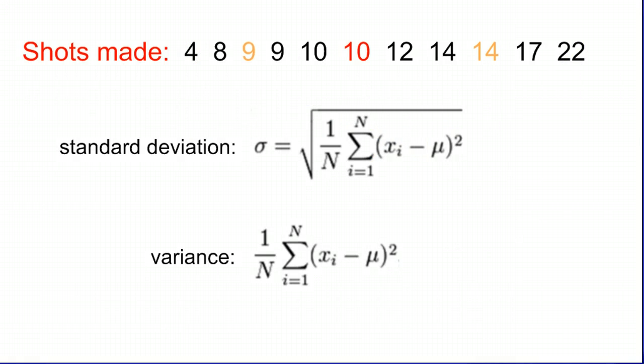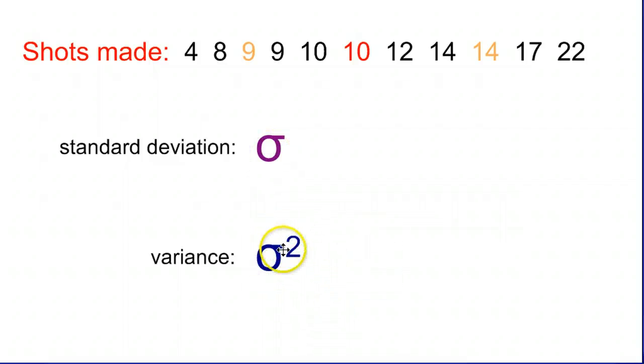Another one is the standard deviation and the variance. That's something that you would use your calculator to find. And as you can see by these complicated formulas that describe them, you're never really going to ever do that by hand. However, the typical symbol for standard deviation is sigma. And the variance is sigma squared.